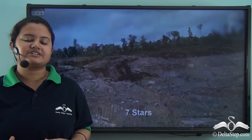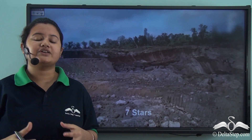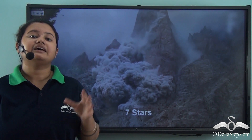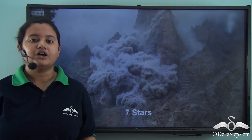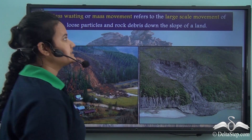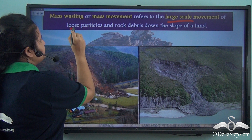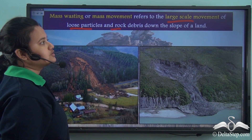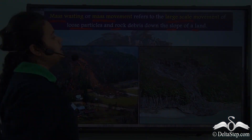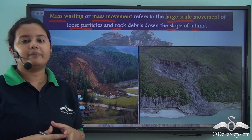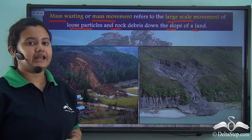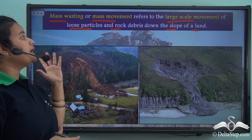Look at these catastrophes. In the first case we can see that mud and clay particles gradually move down the slope of a land. Next we can see that a part of the hill cut off and the rock particles move down the hill. Do you know what these natural phenomena are called? The large scale movement of loose particles and rock debris down the slope of a land is called mass wasting or mass movement.